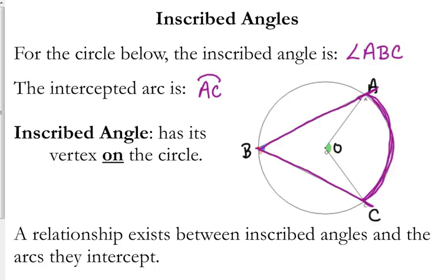Here's the difference between a central angle and an inscribed angle. The inscribed angle has its vertex on the circle. The vertex B is on the circle. It's not in the circle. It's not on the center of the circle. It is on the circle. That is an inscribed angle.